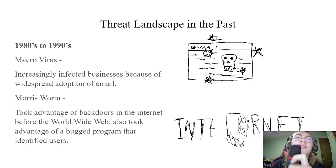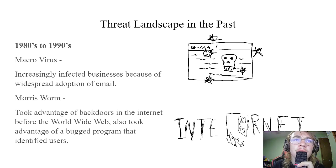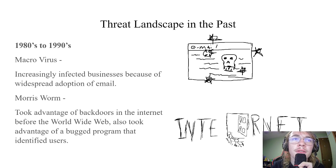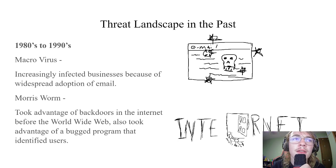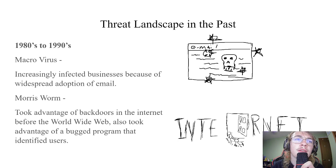Now that we're done talking about what Threat Landscape is, we can talk about what that landscape was like in the past, pertaining to the 1980s and 1990s. First up is the Macrovirus. These came about thanks to standardization of technologies and allowed malware to spread through email attachments. Macroviruses took advantage of the fact that Microsoft Office products had a distribution increase with the adoption of email, which is why in the 1990s, businesses were increasingly infected.